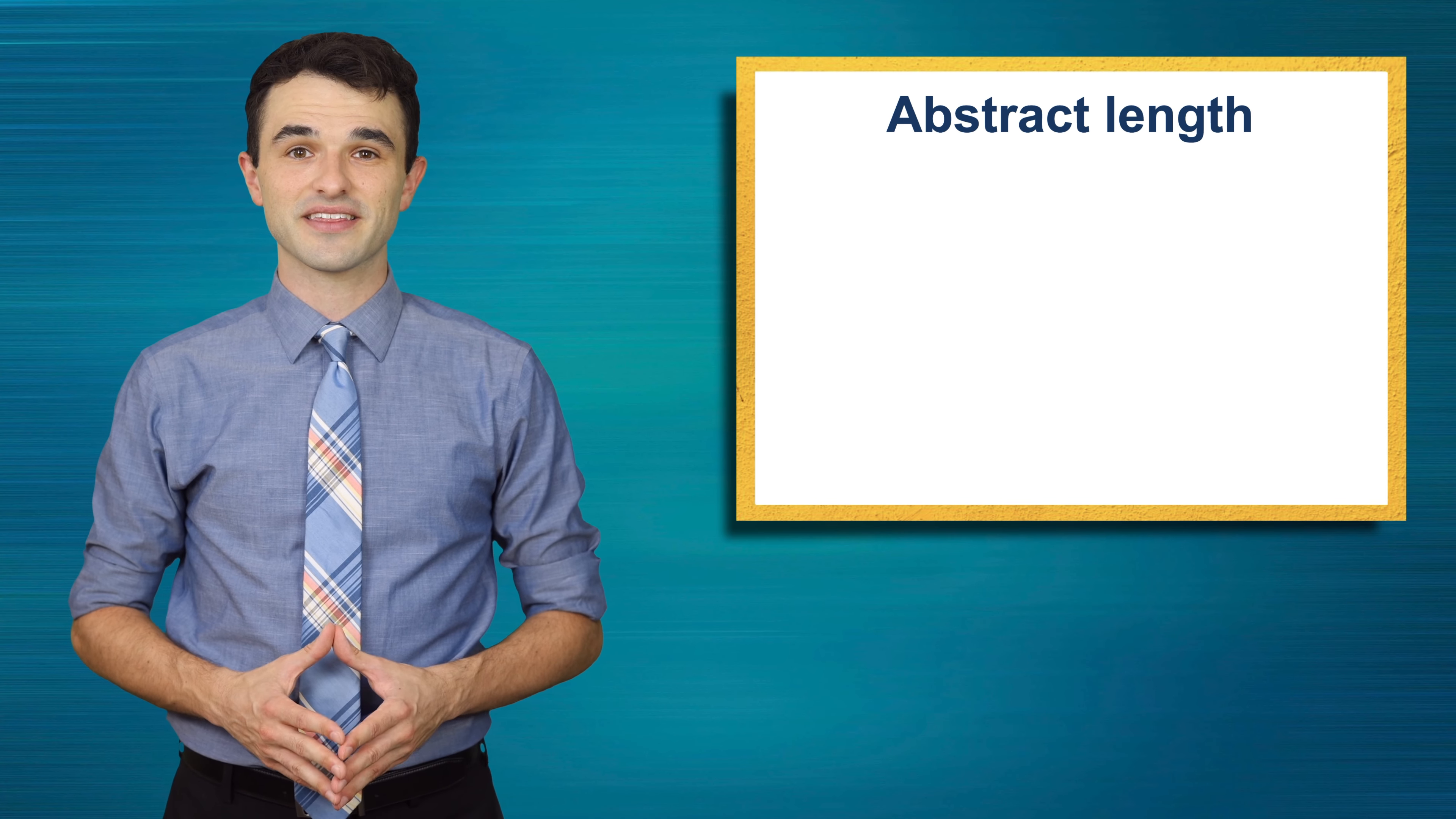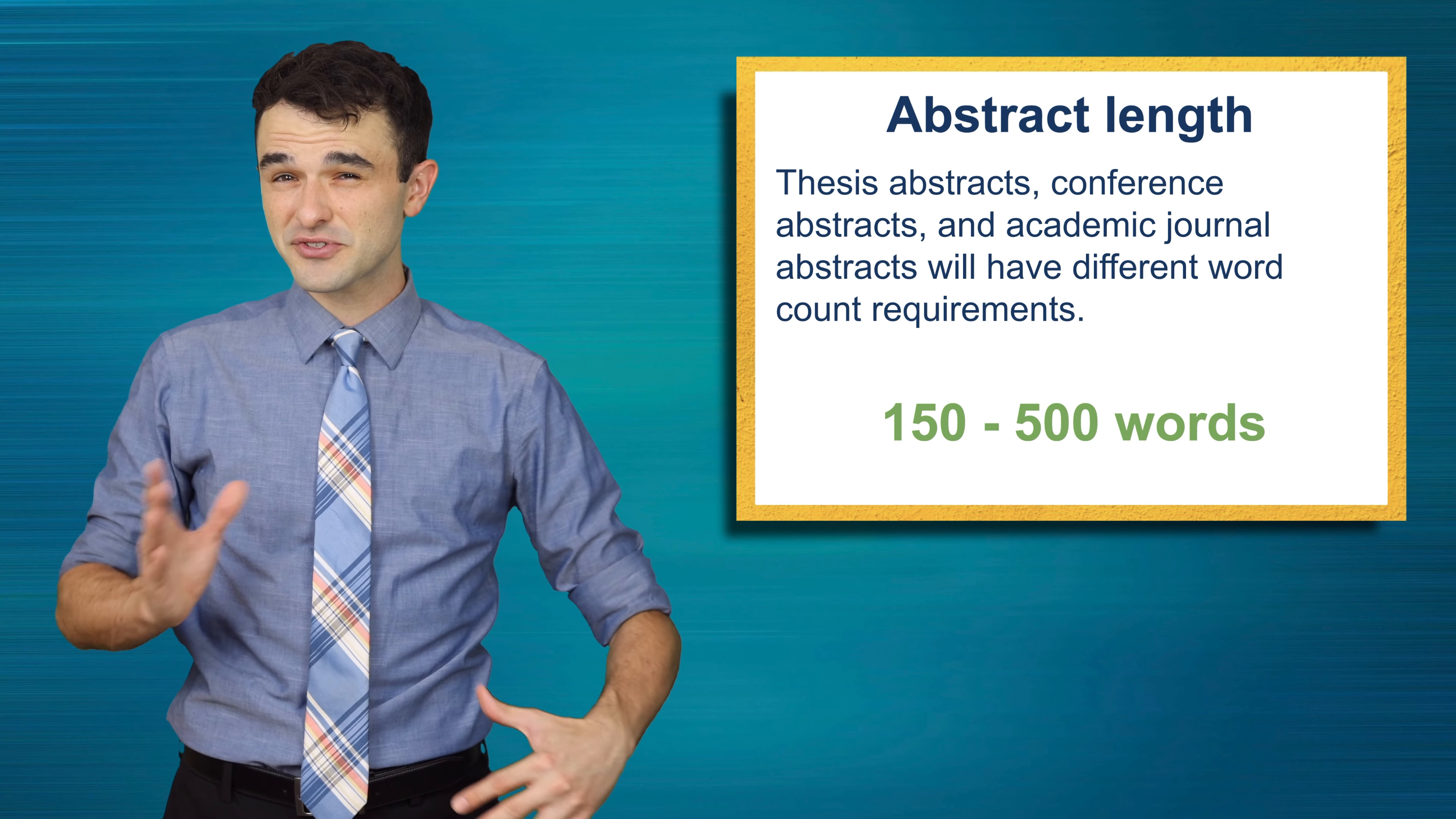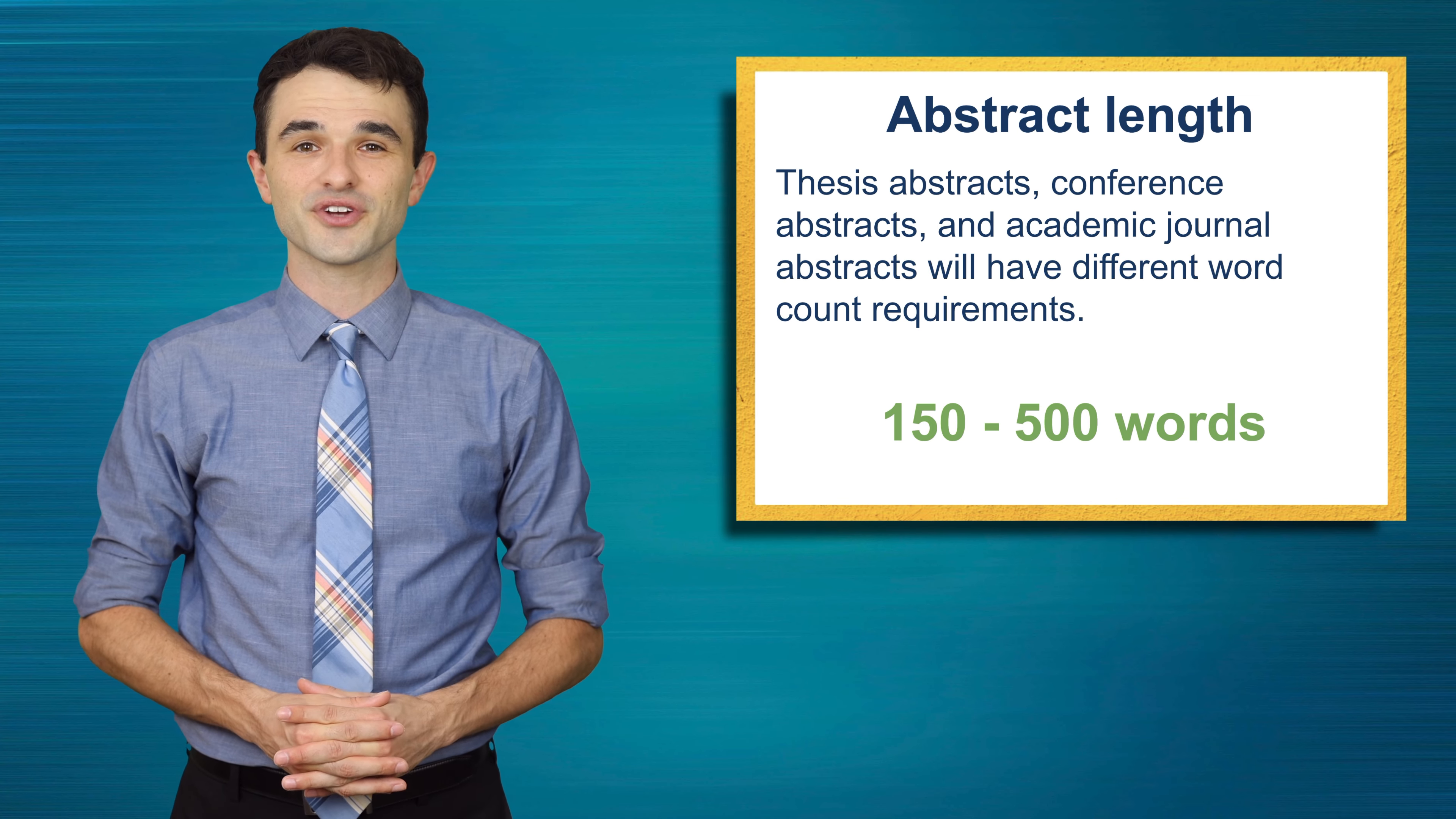Abstract length. Thesis abstracts, conference abstracts, and academic journal abstracts will have different word count requirements. Typically, abstracts are required to be between 150 and 500 words long, but be sure to check with your school's thesis guidelines, the conference guidelines, or the instructions for authors for your target journal.